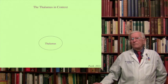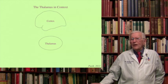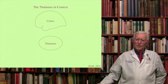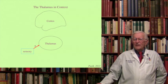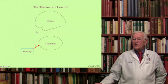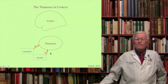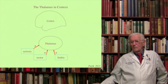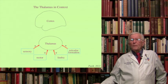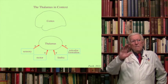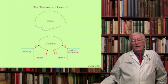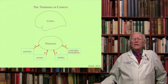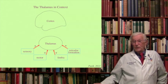The thalamus receives several kinds of information. It receives information from the sensory systems. It receives information from the motor system — remember the motor control systems like the cerebellum and basal ganglia. It receives information from the limbic system quite a bit. It receives also information from the so-called reticular formation, which is the matrix of the tegmentum of the brainstem that remains after carving out all the pathways, cranial nuclei, large nuclei, monoaminergic and cholinergic groups, and so forth. That reticular formation also projects to the thalamus.